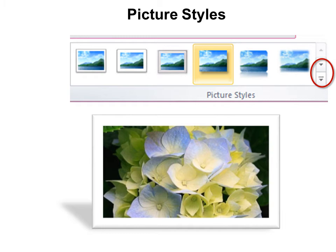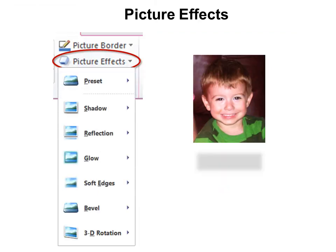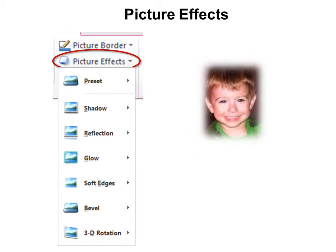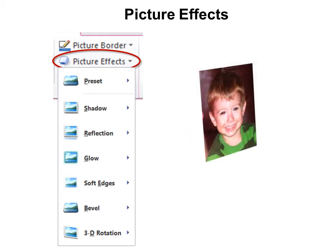I highly recommend you go in there and try those right now. And remember, you can always use the reset picture if you want to go back to a normal picture. These are picture effects which are similar to the others. For example, this one is shadow. And here is the soft edges at 25 pixels. So we took off a lot of the edge by using the soft edges. And then here's 3D rotation.